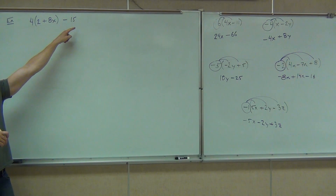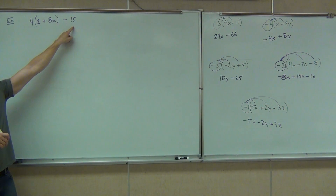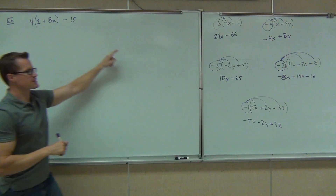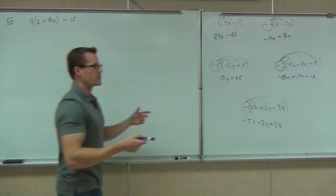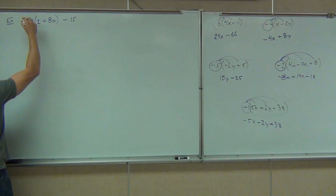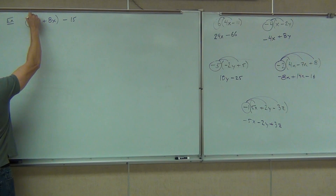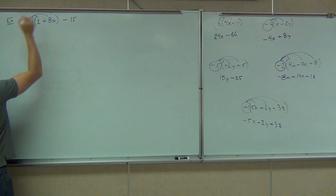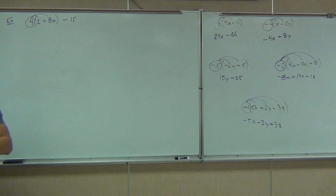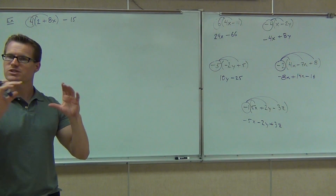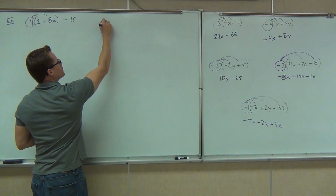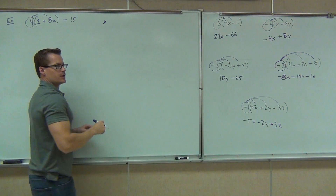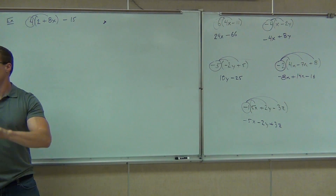What about the 15? No — why not? It's not in parentheses. That's why I went to that third term. But here, this 4 is just going to be distributed to the terms inside the parentheses. Let's do that part first — we'll distribute just what's in the parentheses, and then we'll combine like terms. So our ideas are: distribute, and then combine like terms.